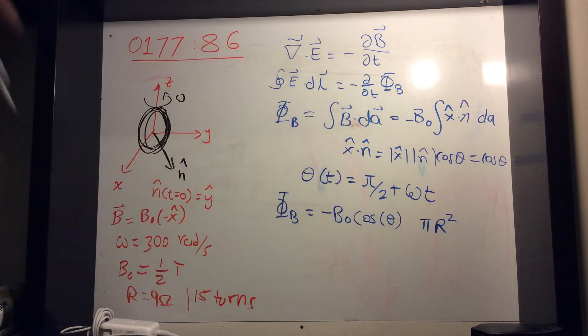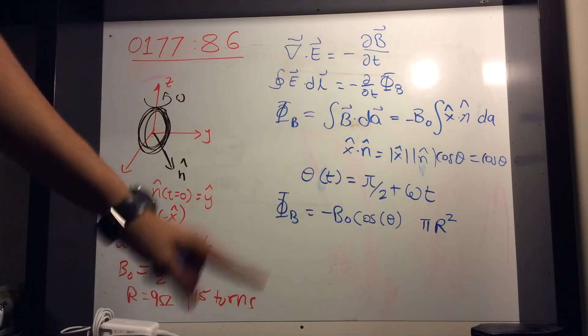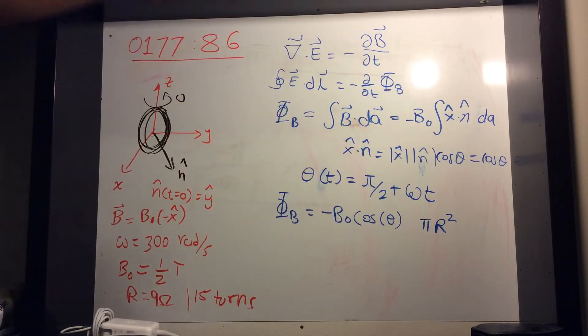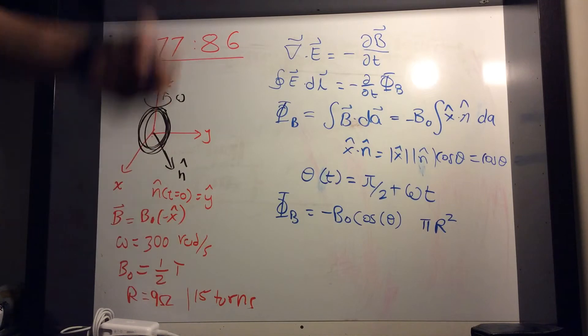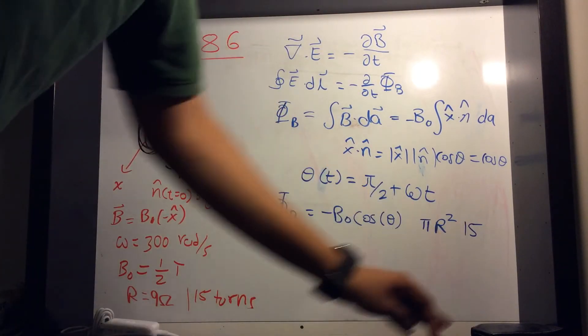Now someone should be mad that I wrote pi r squared because there are 15 turns. Each turn adds one area. When you go again, you get twice the area. When you go 15 times, you get 15 times the area.